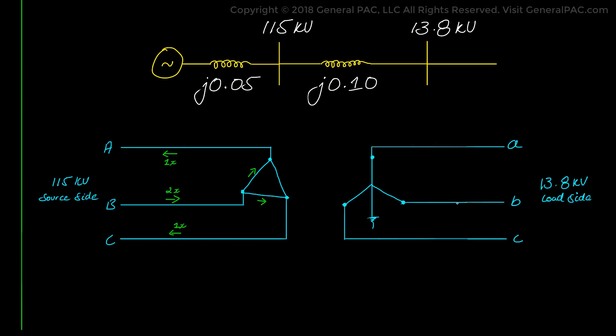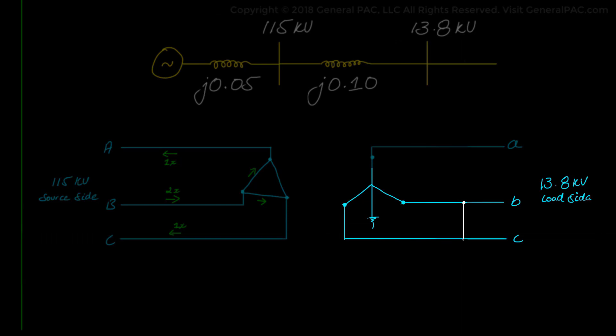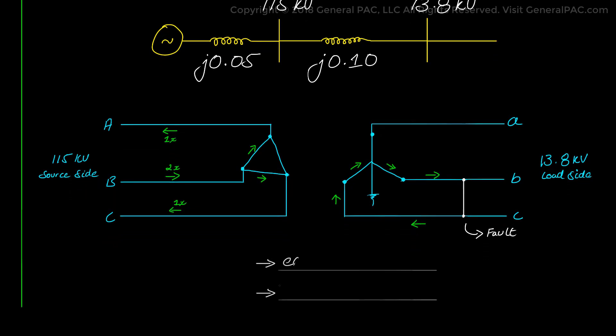We have a line-to-line fault on the 13.8 kV side in which phase B and C are involved. The fault current on phase B flows towards the point of the fault. However, on phase C, the fault current is flowing away from the point of the fault. Therefore, for a phase-to-phase fault, we should expect the fault current on both phases to be equal in magnitude but opposite in direction.